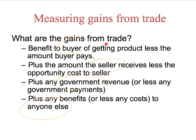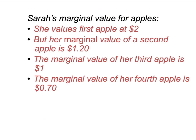We've noted that the gains from trade to the buyer is the benefit the buyer gets from the relevant product, less the amount the buyer pays. We've been using a running example with Sarah, and the product she's been interested in is apples. We've looked at Sarah's marginal value for those apples — for example, the marginal value to Sarah of her third apple, which is a dollar, means: given that she has two apples, what is the most she is willing to pay for the third apple? That's her marginal value of the third apple, which is a dollar.